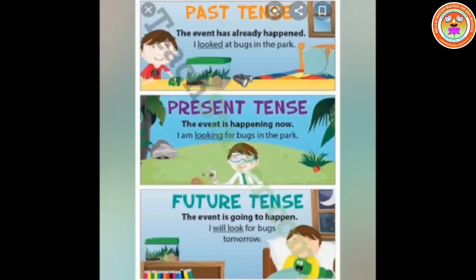Tenses are divided into three: past, present, and future. Past tense indicates the event has already happened. For example, 'I looked at the bugs in the park.' Present tense indicates the event is happening now. 'I am looking for a bug in the park.' Future tense indicates the event that is going to happen. 'I will look for the bugs tomorrow.'